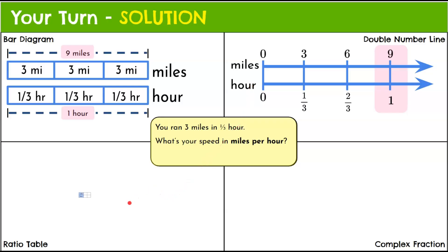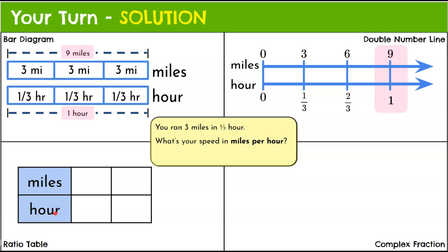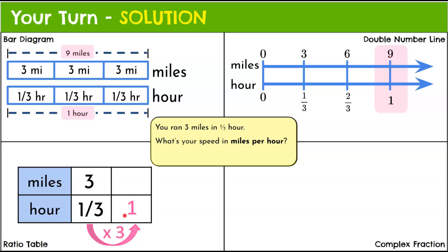Now the ratio table — miles and hour. We enter our given rate: three miles in one-third of an hour. We need the hour value to be one. To get from one-third to one, we multiply by three. We must do the same to the other quantity: three times three is nine. So there is our unit rate — nine miles in one hour.